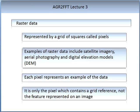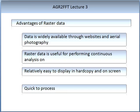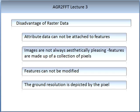It is only the pixel which contains a grid reference, not the feature represented in the image. There are several advantages of using raster data: the data is widely available through websites and aerial photography; raster data is useful for performing continuous analysis; it is relatively easy to display in hard copy or on screen; and most importantly, it is quick to process. There are disadvantages too: attribute data cannot be attached to features; images are not always aesthetically pleasing; features are made up of a collection of pixels; features cannot be modified; and the ground resolution is depicted by a pixel.